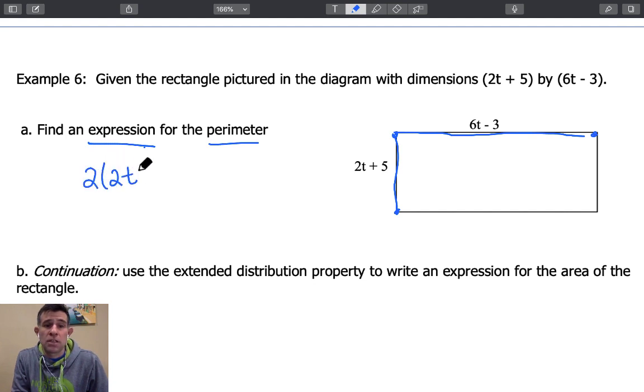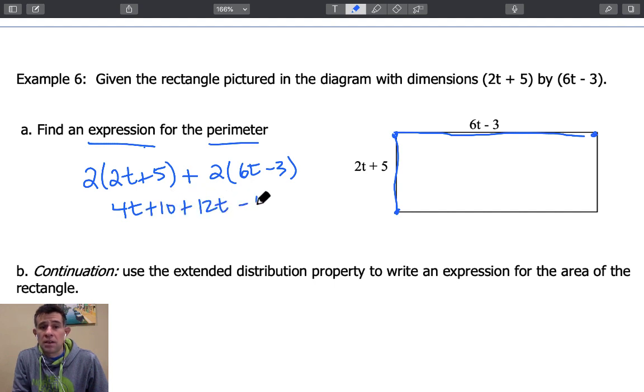So each of these widths here will be 2t plus 5. So there's actually two of them. So we can write 2 times 2t plus 5 and then we can add to that 2 times the width or the length of this rectangle which would be 6t minus 3. Following our distribution property here we're going to end up with 4t plus 10 plus 12t minus 6. Now we can combine our like terms.